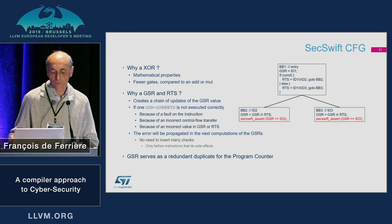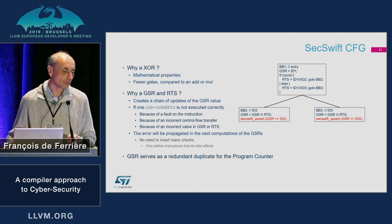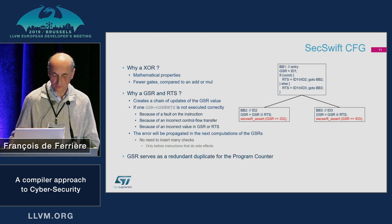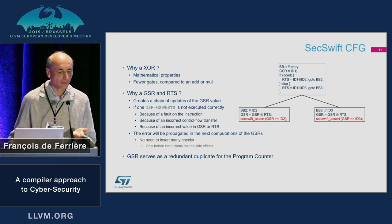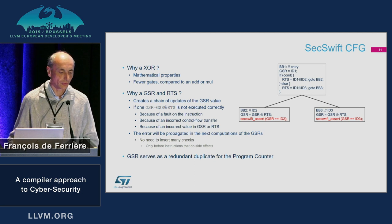We only need to put assertions at some synchronization points, notably when there is an operation with a side effect. We can see the GSR variable as a redundant copy of the program counter.